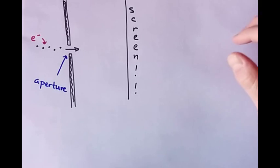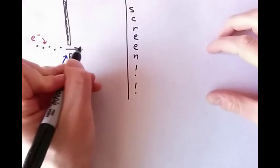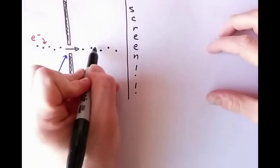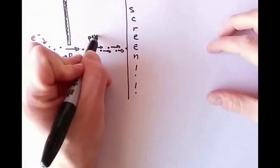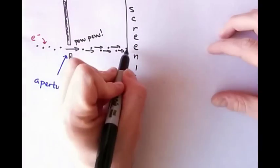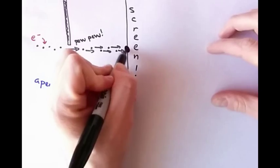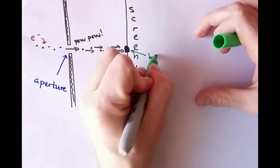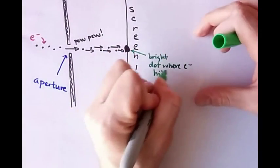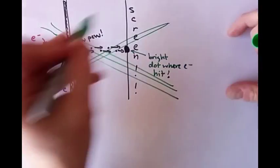It doesn't seem very interesting because you'd expect electrons are like little bullets, and they'll just go through the aperture, and they'll hit the screen, and you'll get a big bright dot on the screen. That's not what happens, though. That's why we're talking about this.